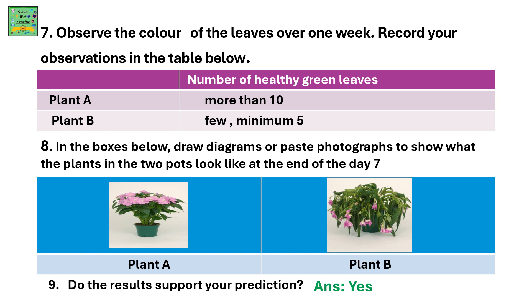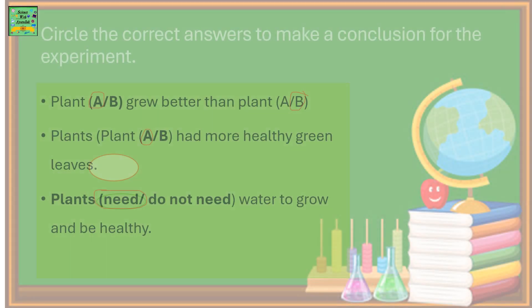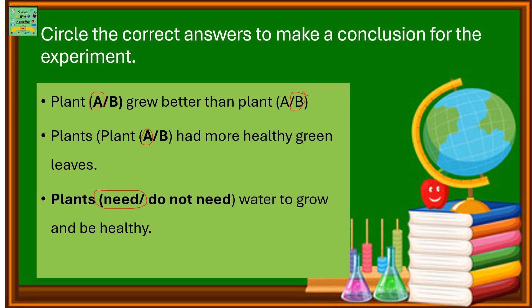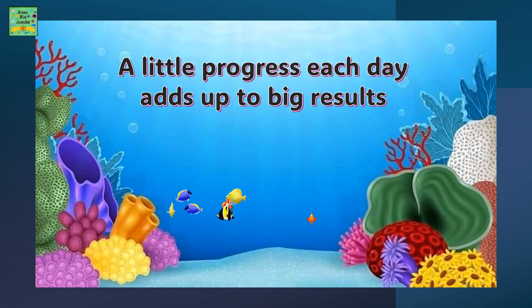Do the results support your prediction? Yes. Circle the correct answers to make a conclusion for the experiment. Plant A grew better than plant B. Plant A had more green healthy leaves. Plants need water to grow and be healthy.